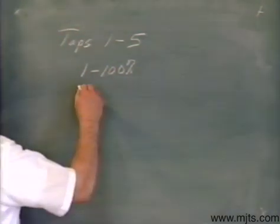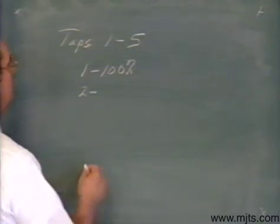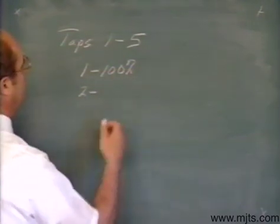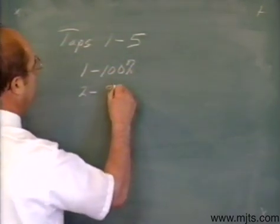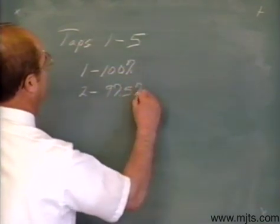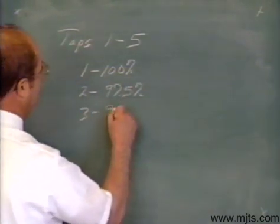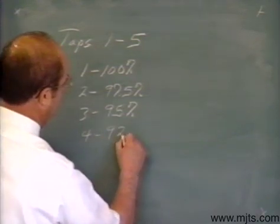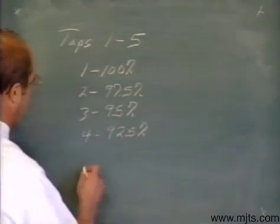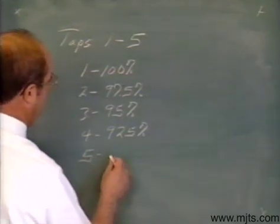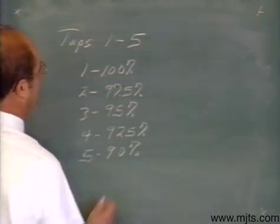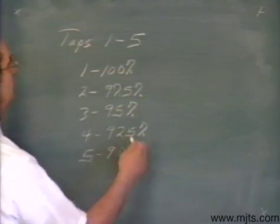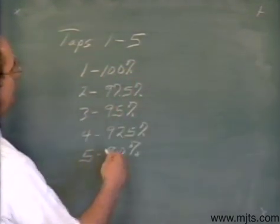For tap number two, we would have two and a half percent fewer windings in use — we'd be cutting out 2.5%, so we'd be using 97.5% of our windings. Tap three is 95%, down another two and a half percent. Tap four would be 92.5%, and tap five we would be using 90% of our windings. To be certain of your taps, go to your name and data plate to see what the taps are and how they're identified.